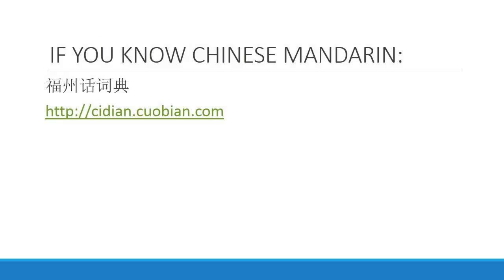If you know Chinese Mandarin, you definitely have a lot more access to different resources. One thing I found out recently is the Fuzhou hua zǐ diàn — Fuzhou nià's dictionary. Something really cool about it is that it actually has an audio version. It's not complete because the people working on it are still developing the resource, but it's still really cool for checking words. You do have to type in Chinese, but they have a lot of awesome stuff in there — definitely check it out.